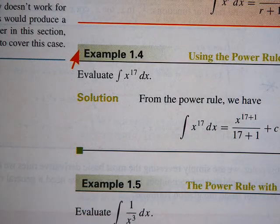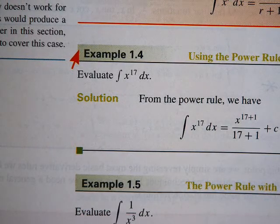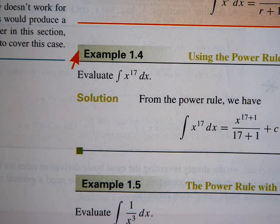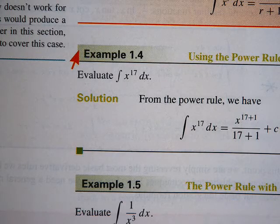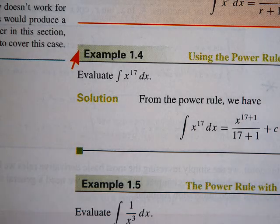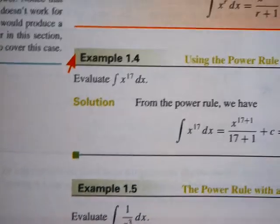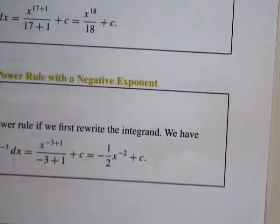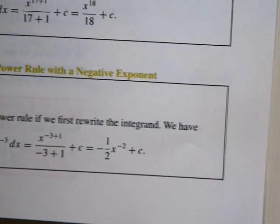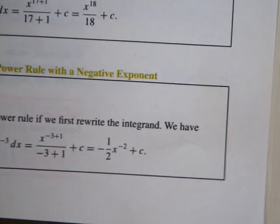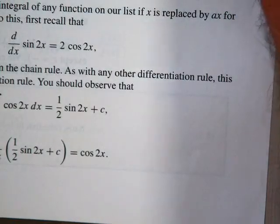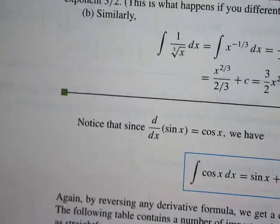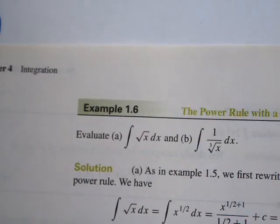But now, we get to something like this, one over X to the third. So, I've got an X to the negative 3. So, my new exponent's going to be negative 2. Negative 2, and I'm going to divide by negative 2. Don't forget to add the C.